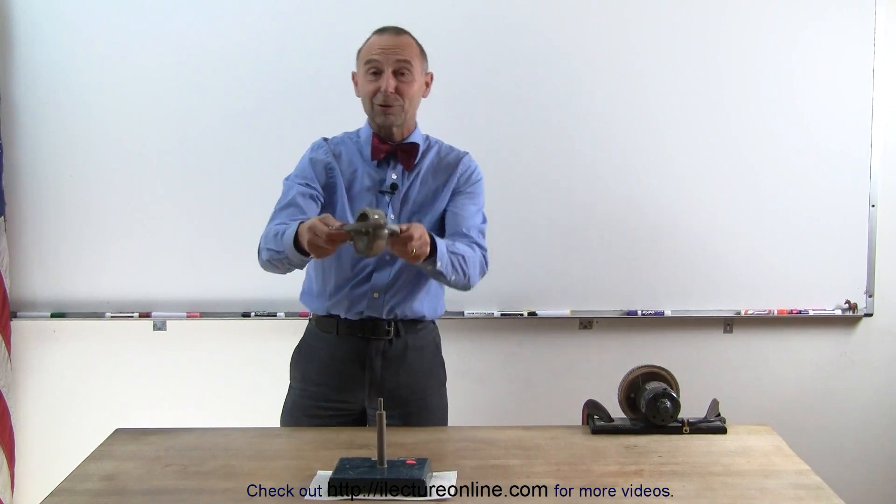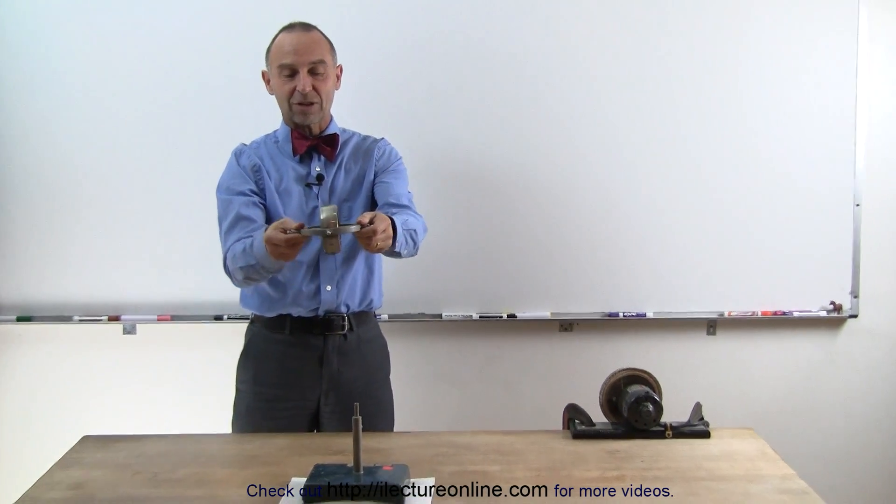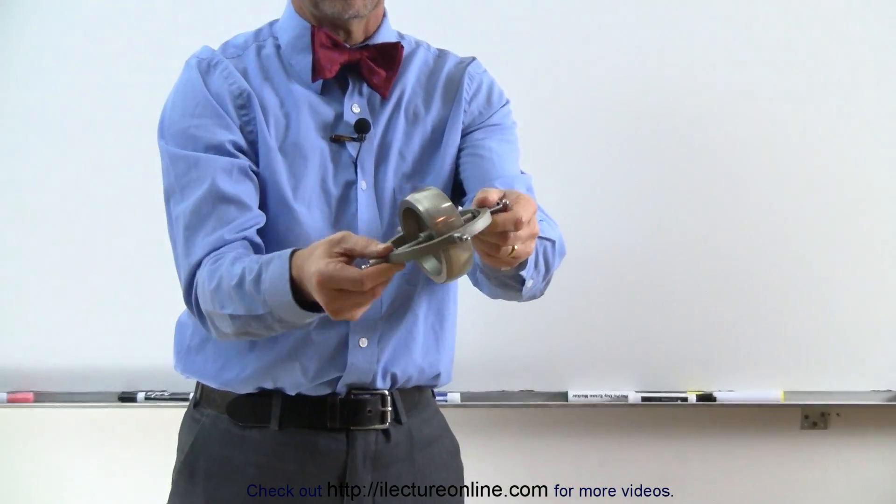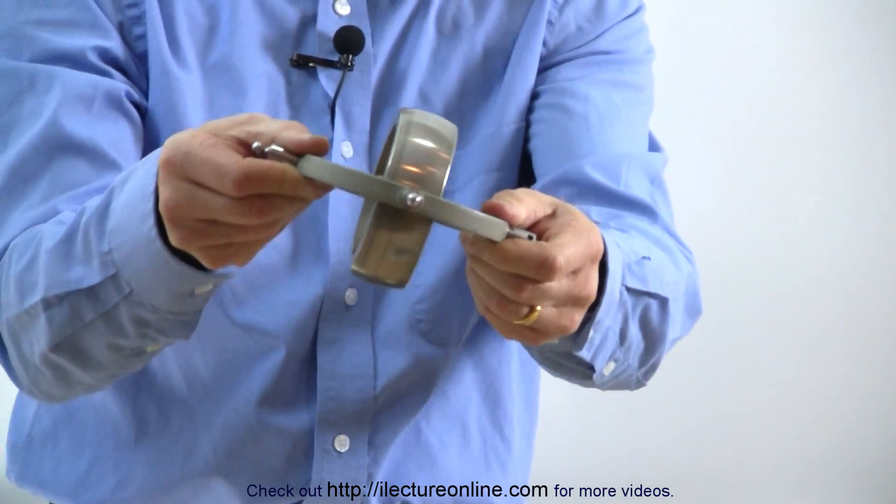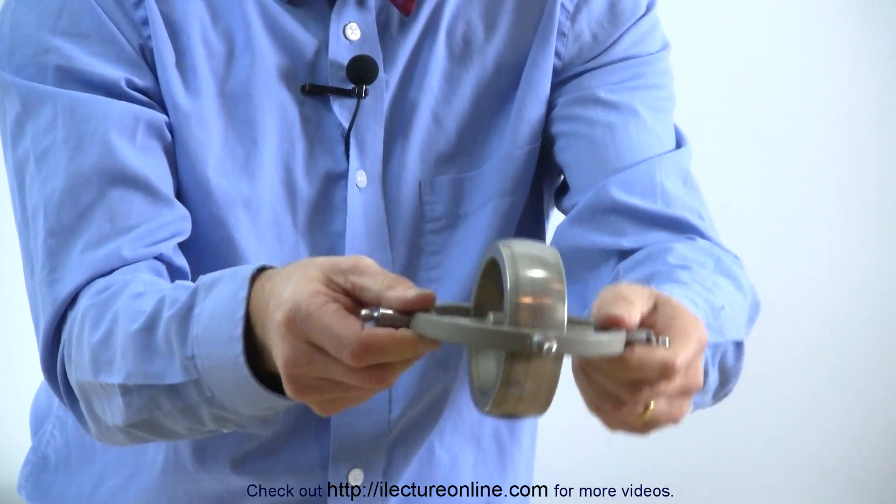Now, another interesting thing is, which of course you can see there in the camera, is that when I start changing the direction of spin, I can really feel a lot of force. It takes a lot of strength to keep this from falling out of my hands because it wants to kind of jump out of my hands.